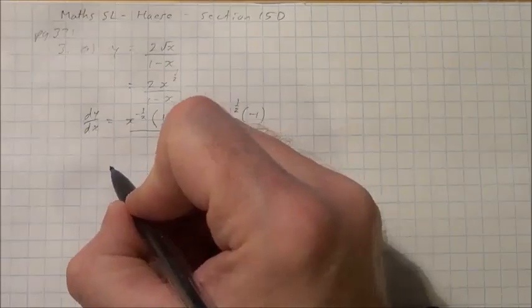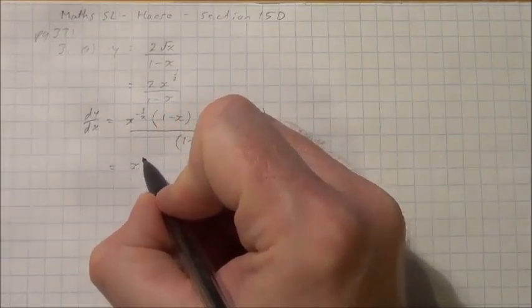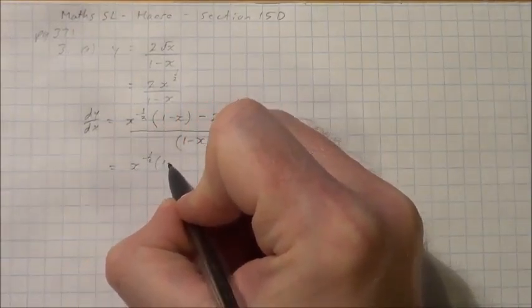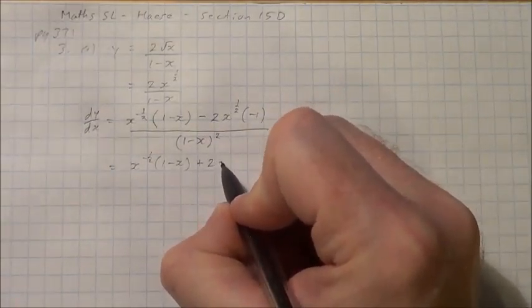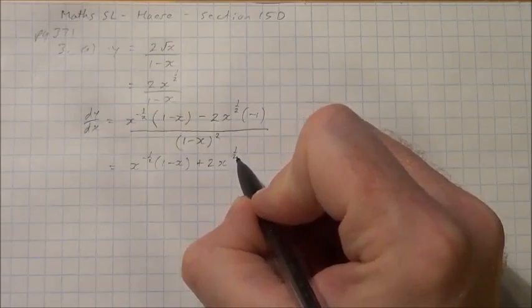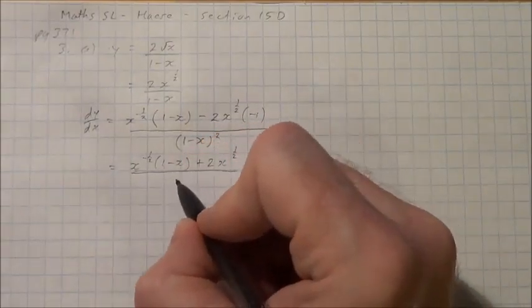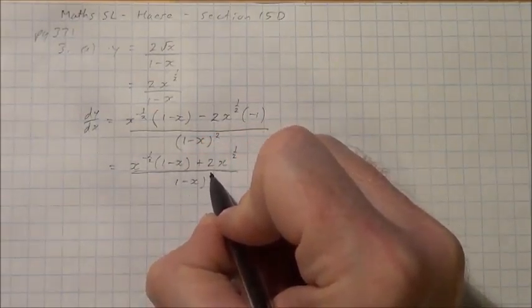I'll clean up the numerator a little bit. There's nothing I can do with that first term, but I'll bring the negative 1 and negative 2 together. This gives positive 2x to the one-half, over (1 minus x) all squared.